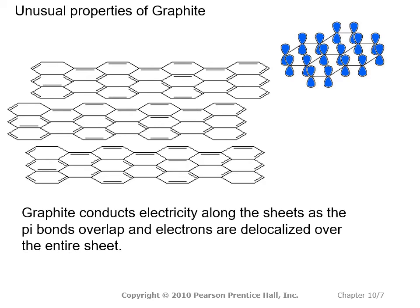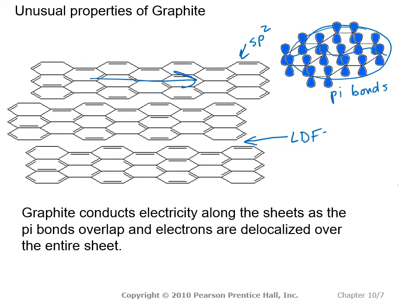Graphite has some unusual properties. It can conduct electricity along the individual sheets because the electrons are delocalized over the entire sheet by the pi bonds — the electrons travel along with the pi bonds. Every single one of these centers is SP2 hybridized, so we've got p orbitals along the top. What's holding the sheets together are London dispersion forces.